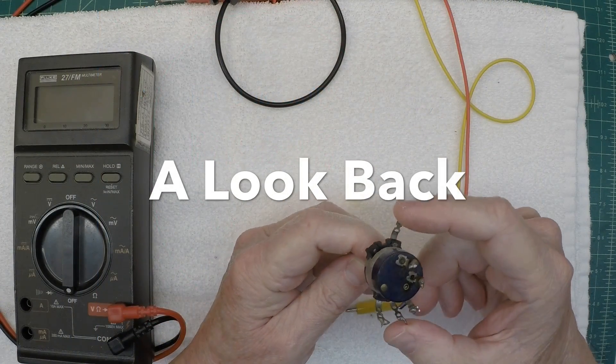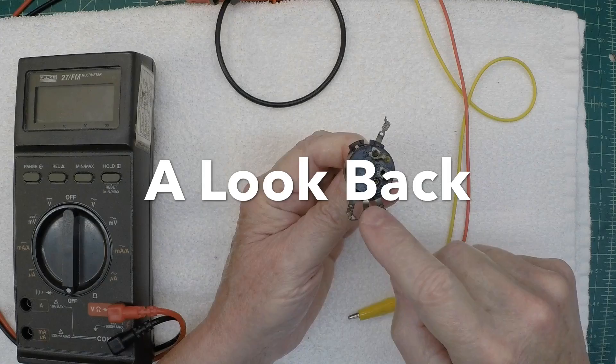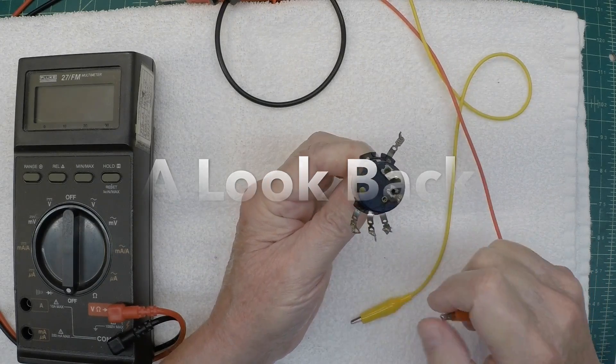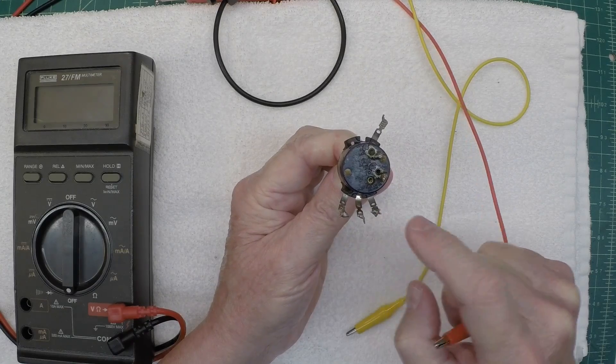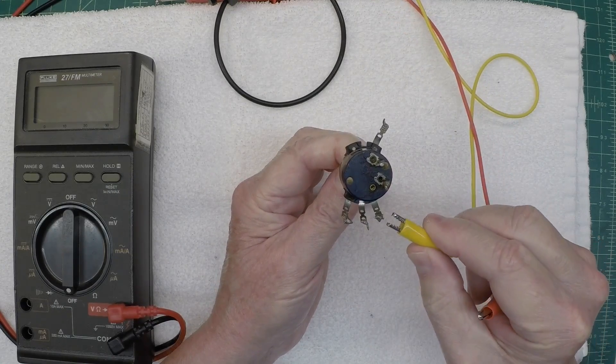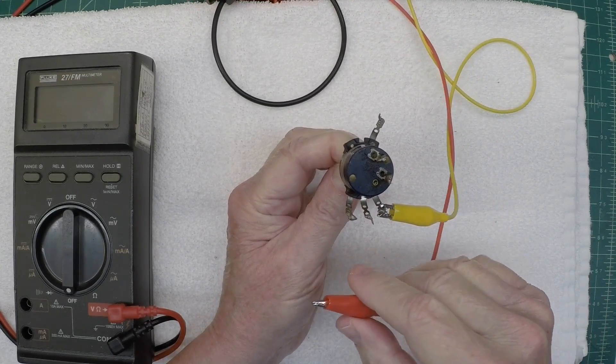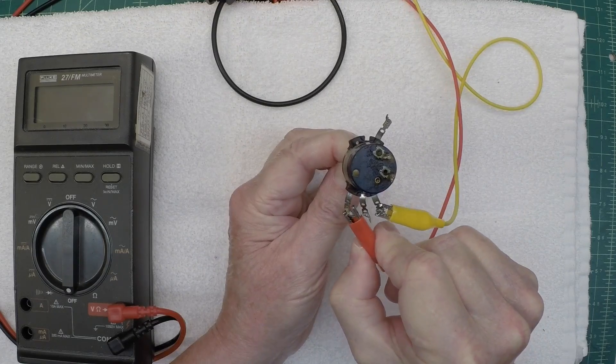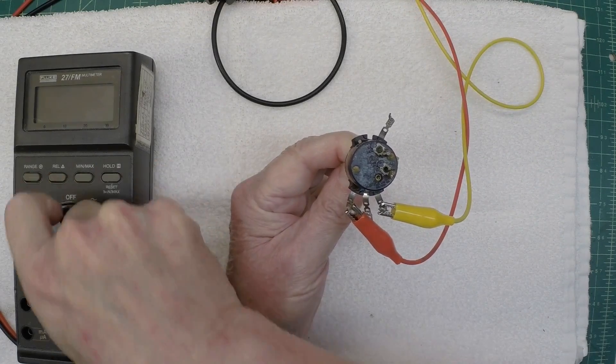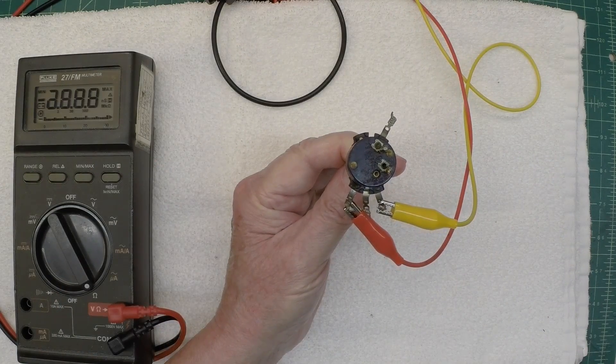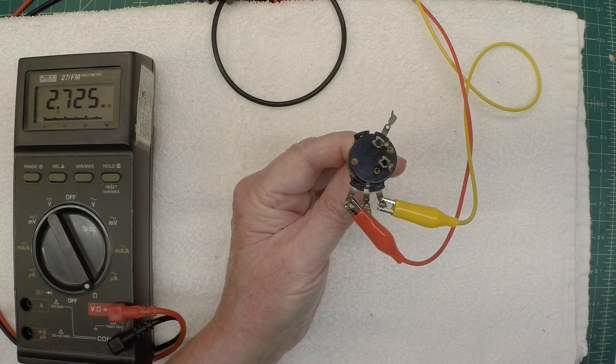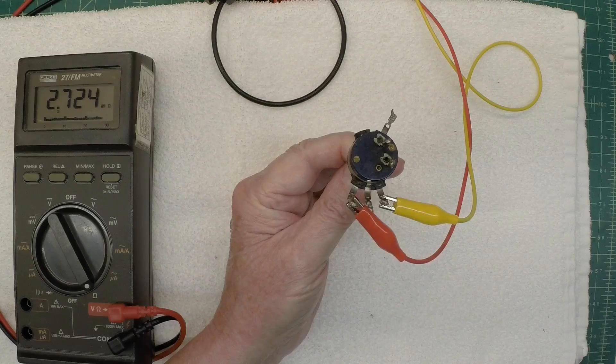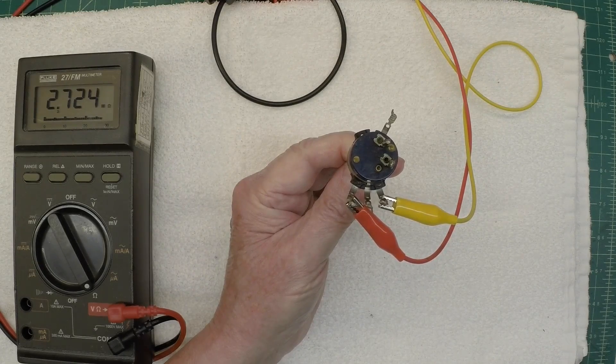You can see the tap location here and we're looking at this from the rear side, so this will be our high side, our wiper, and our low side or ground side. So let's double check this thing. I think it read just under 3 meg before, and you can see that's where we're residing today, about 2.7 meg.